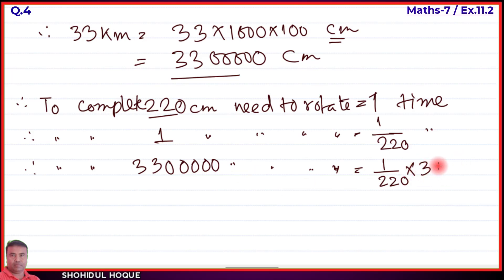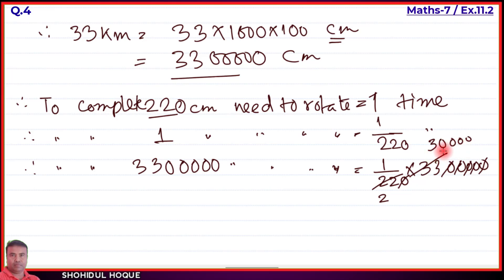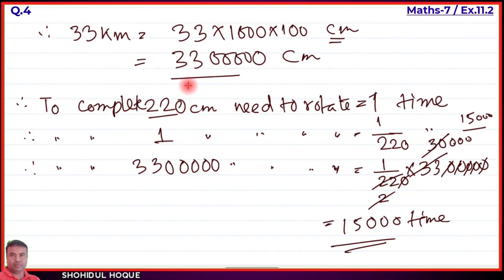Number of rotations equals 3,300,000 divided by 220. Cancelling zeros: we get 33 lakh divided by 220. Simplifying: divide both by 22, giving 11 into 3 divided by 10. Further simplifying: 33 divided by 220 gives 15,000. So the wheel needs to rotate 15,000 times to cover 33 kilometer.